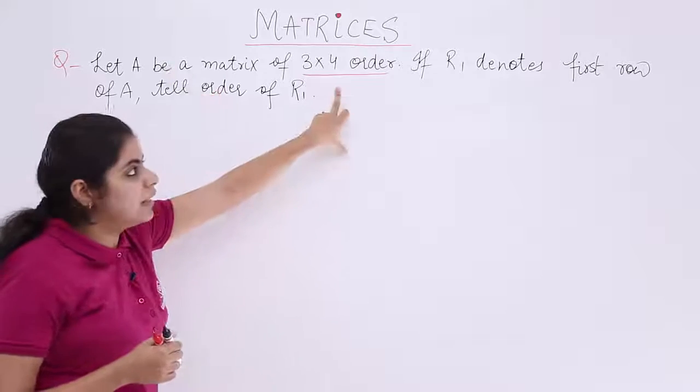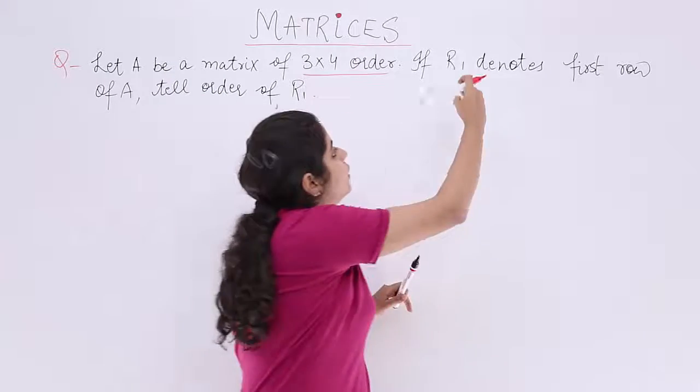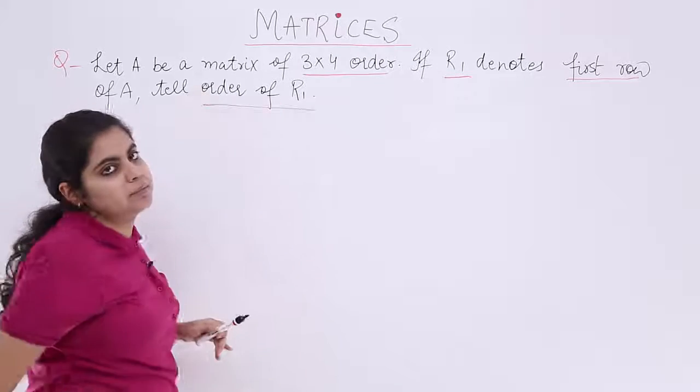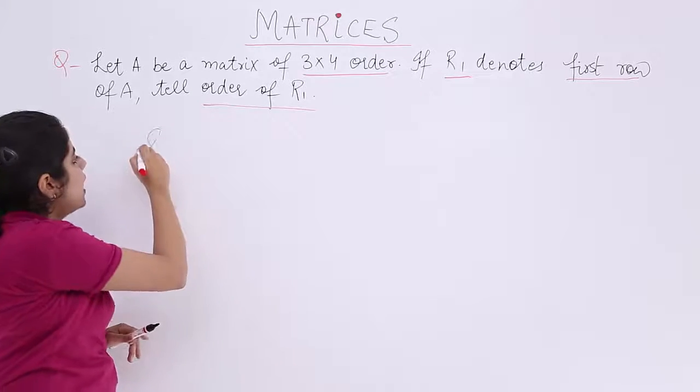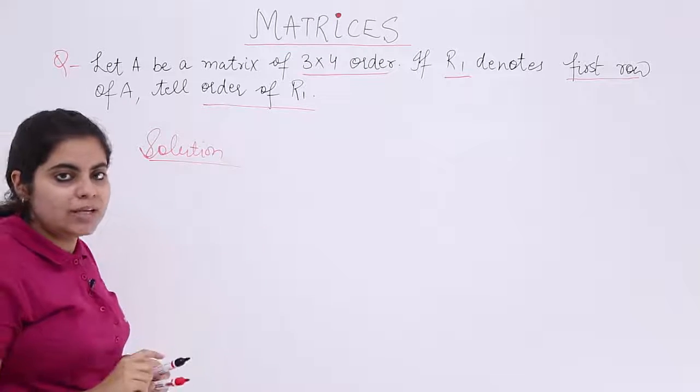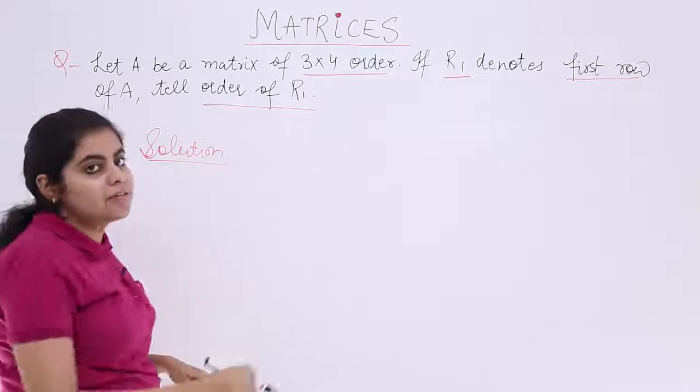The question is a matrix is given. R1 denotes the first row and you are supposed to find the order of R1. Let's put the heading solution and then we will see what does the question basically mean. Right? 3 by 4 matrix means what?